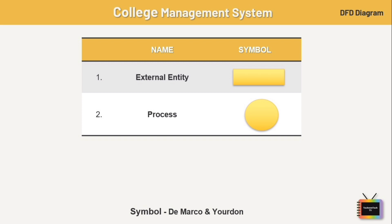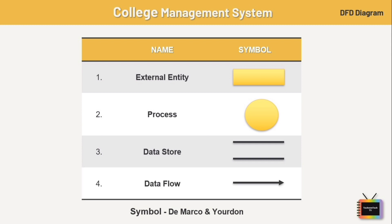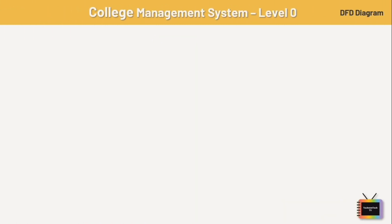Every process has a name that identifies the function it performs. Next is data source or database — a data source is a table that stores files or repositories for future use. Last, we have data flow — data flow is the flow of data between external entities, processes, and data stores.